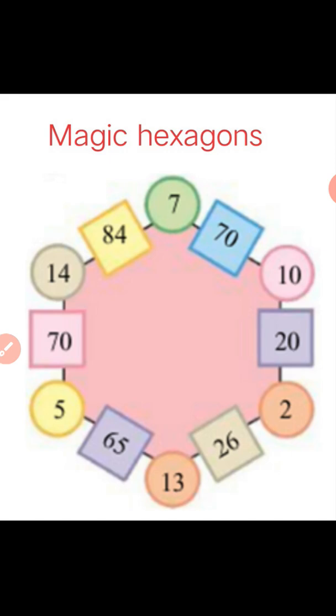Like that here along the sides of hexagon, along each side numbers are written. That is each side has got two circles and one box. The rule here is when you multiply the numbers inside the circle, you will get the number which is written inside the box.